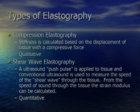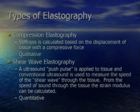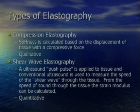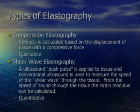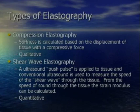There are two types of elastography. The first is compression elastography, where the stiffness of a tissue is calculated based on the displacement of the tissue with a compressive force. We apply pressure on the tissues, see how they move, and use ultrasound to determine if they're hard or soft. This technique is qualitative — it tells us how stiff something is relative to the other objects in the field of view.